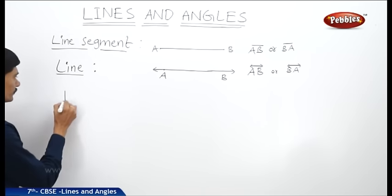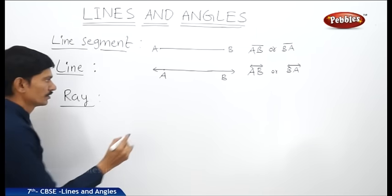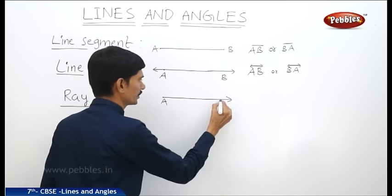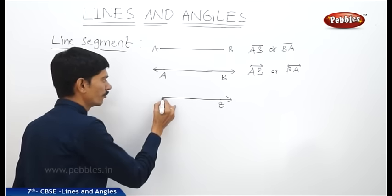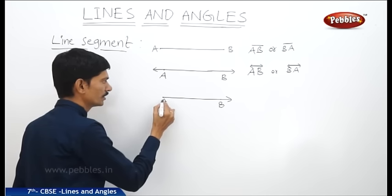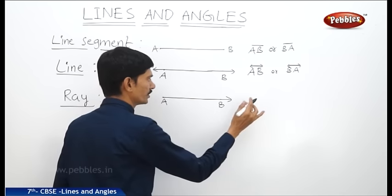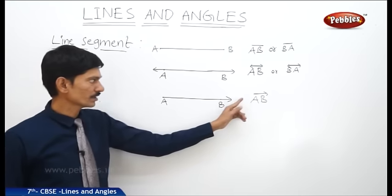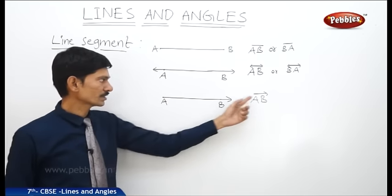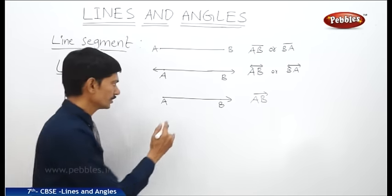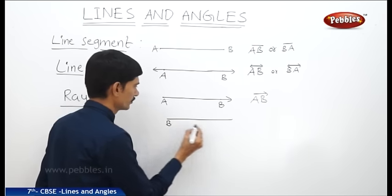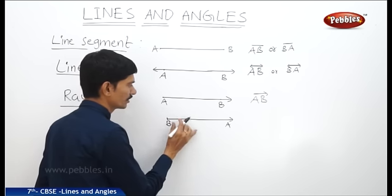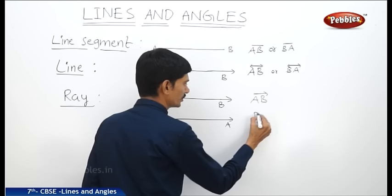What is a ray? It has only one end point and it can be extended on one side. The initial point is represented by A, and it can be extended indefinitely towards B. The ray AB is denoted by AB but not BA, because we should mention the initial point first and then the direction in which it can be extended. If we write ray BA, then B is the initial point and it can be extended towards A, represented by BA.